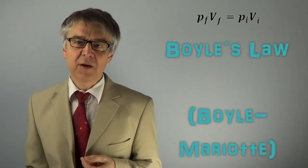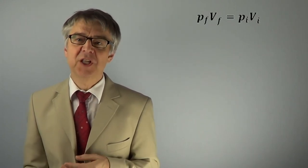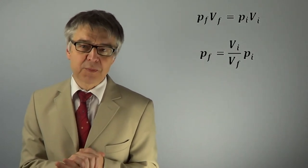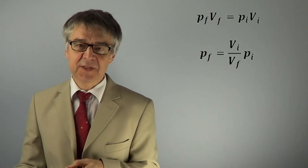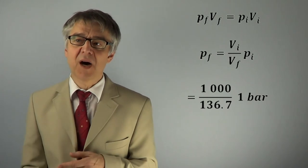To calculate the final pressure P sub f, we use Boyle's law. P times V is constant. Final pressure equals initial volume over final volume times the initial pressure. 1000 over 137 times 1. We end up with 7.3 bars.